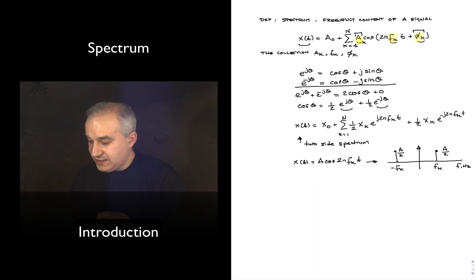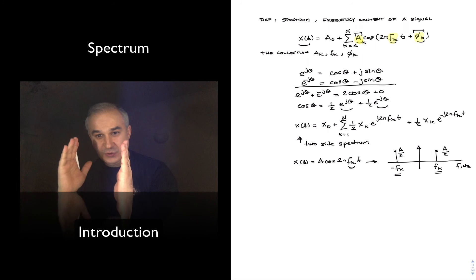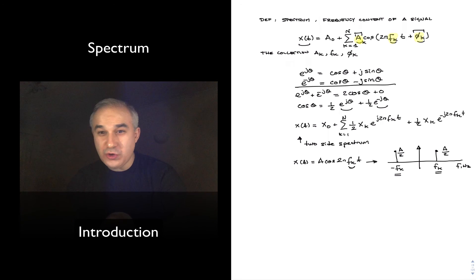And this the amplitude will be a over two and this the amplitude will be a over two. We see that a simple cosine signal with a frequency fk decomposes, the spectrum of that sinusoid is a spectral line at that frequency, positive frequency, and a spectral line at minus fk, and the amplitude is half of each one of those.